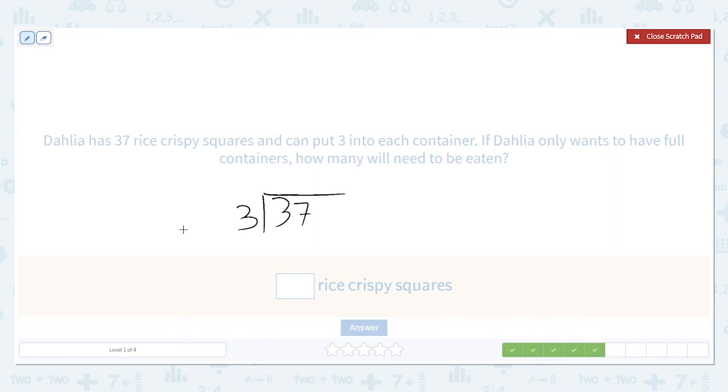Three goes into three one time. Zero, bring down that seven. Three goes into seven twice for a remainder of one.